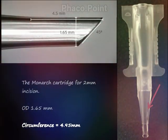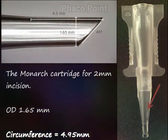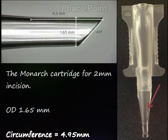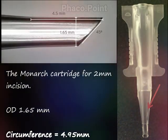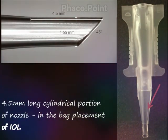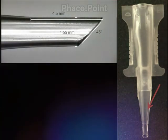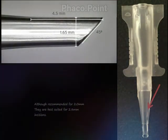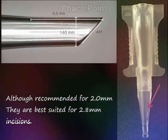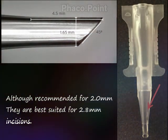Newer designs of the nozzle make them more forgiving. The Monarch cartridge provided by Alcon and the AMO systems have a nozzle tip diameter of 1.65 mm and a circumference of 4.95 mm. In addition, they have a 4.5 mm cylindrical segment instead of a conical segment, which enables us to perform a direct in-the-bag IOL drop in one go. Although these have been recommended by the company for micro-incision cataract surgery of 2 mm or less, I suggest they are probably best suited for the 2.8 mm incision.